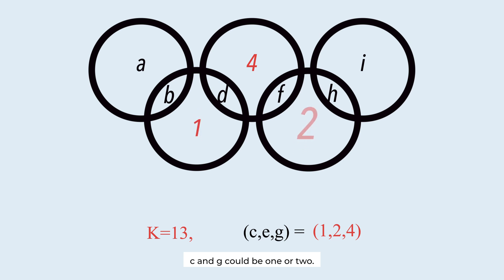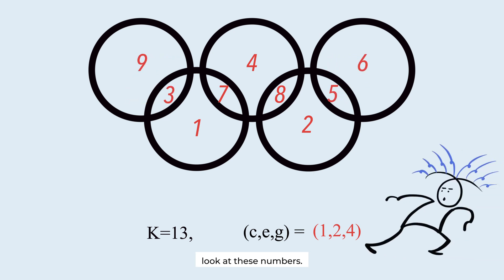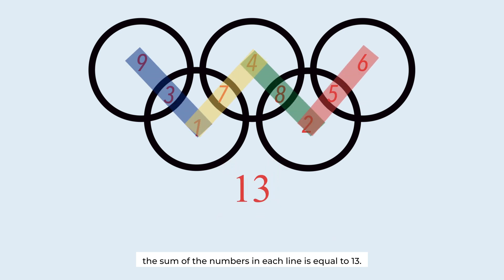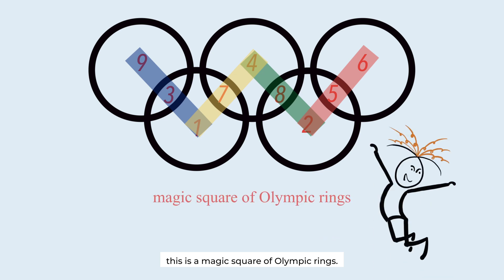C and G could be 1 or 2. To make the sum 13, this is 7, this is 8. 3, 5, 6, and 9 are left. 5 and 6 go here. 3 and 9 go here. The order does not matter. Look at these numbers. The sum of the numbers in each line is equal to 13. This is a magic square of Olympic rings.